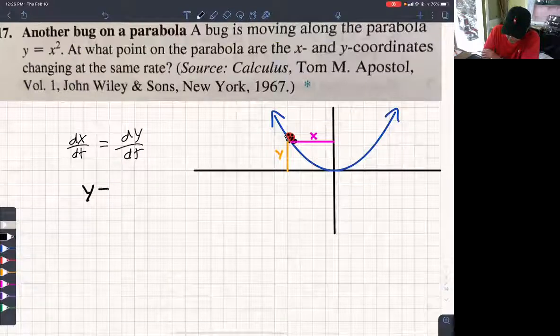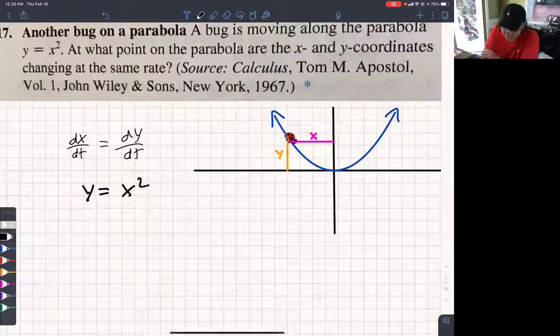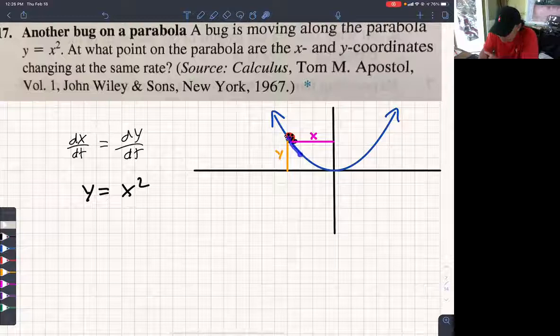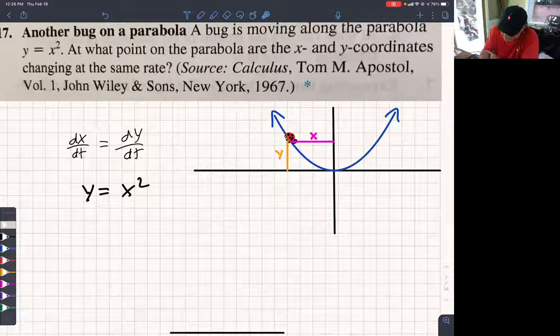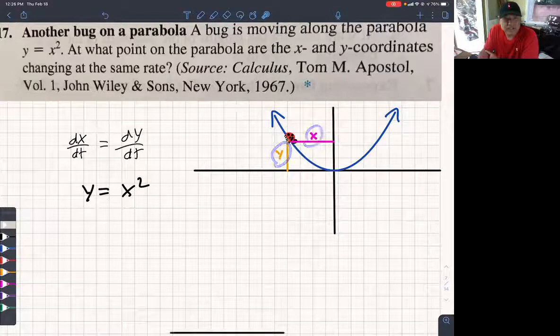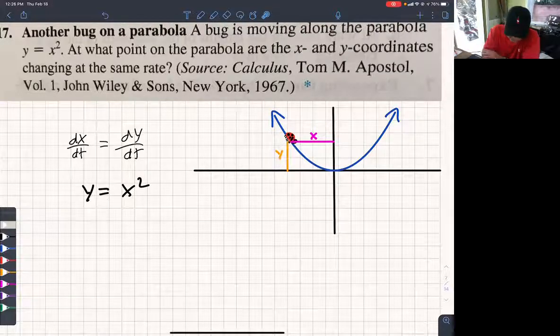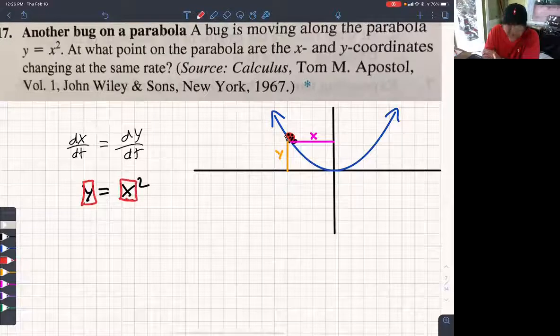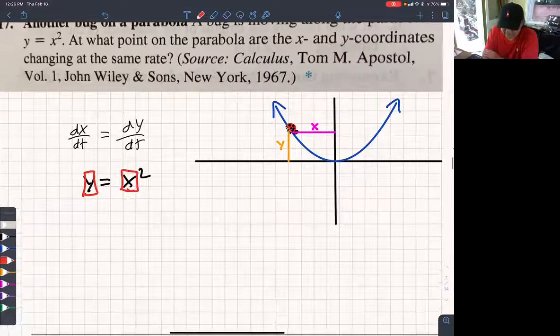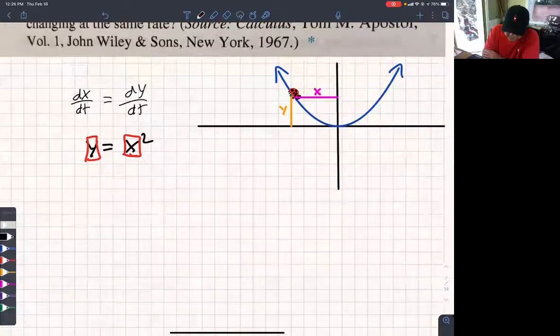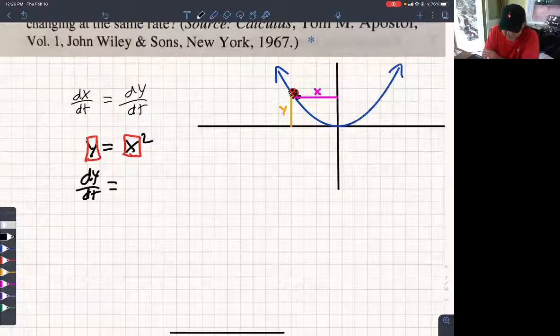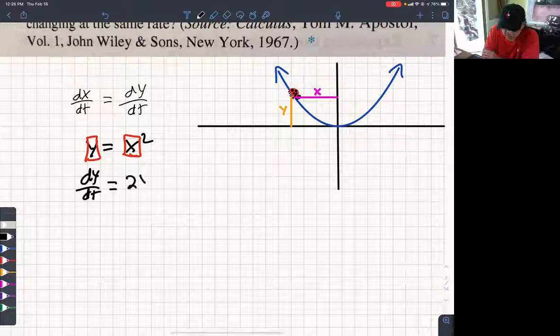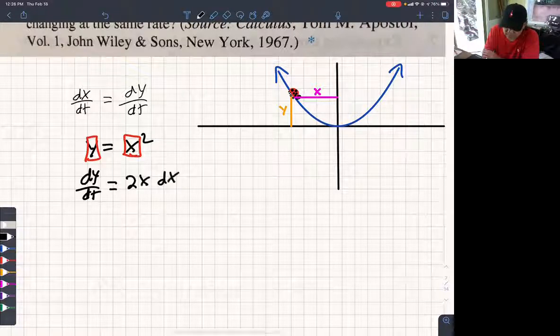They tell you y is x squared. And as the bug moves along this wire, don't you agree x is changing and y is changing? So x and y are functions of time. So they're both box. Right? Well, the derivative of this left box is just dy/dt because of respect to time. The derivative of box squared is 2 box times the derivative of box.